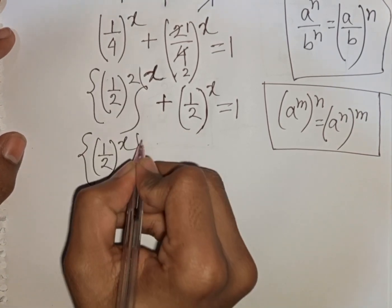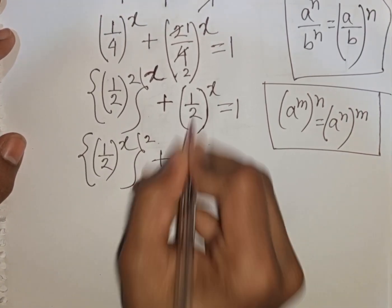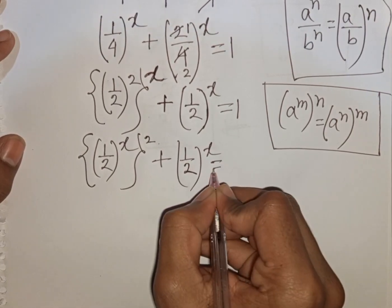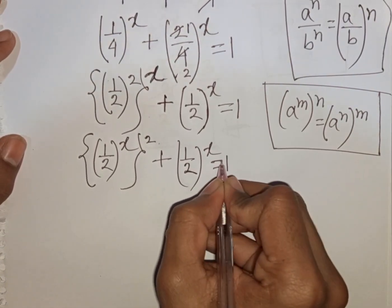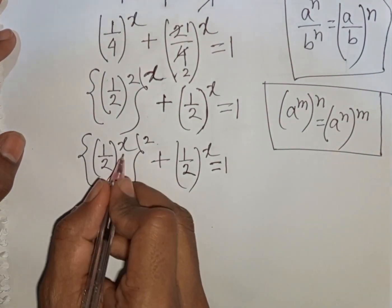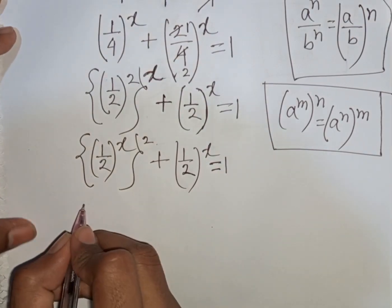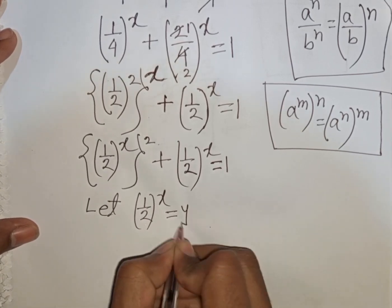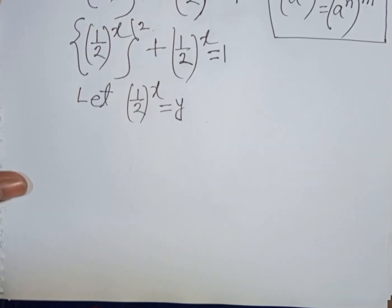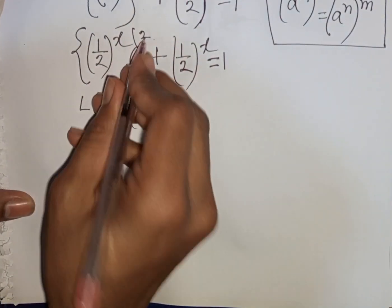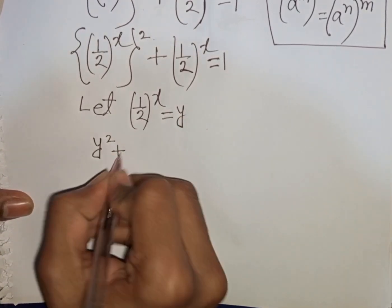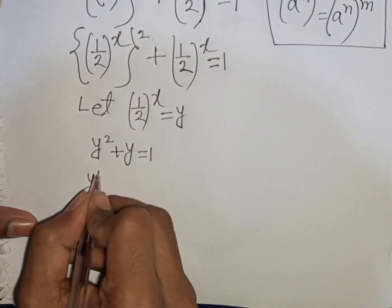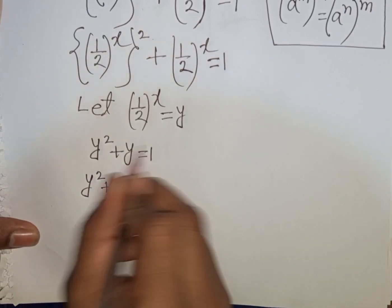Applying the power rule, we write (1/2)^(2·x) plus (1/2)^(2·x) plus (1/2)^(2·x) equals 1. Both terms (1/2)^x are the same, so let Y = (1/2)^x. Our equation becomes Y² plus Y plus Y equals 1.